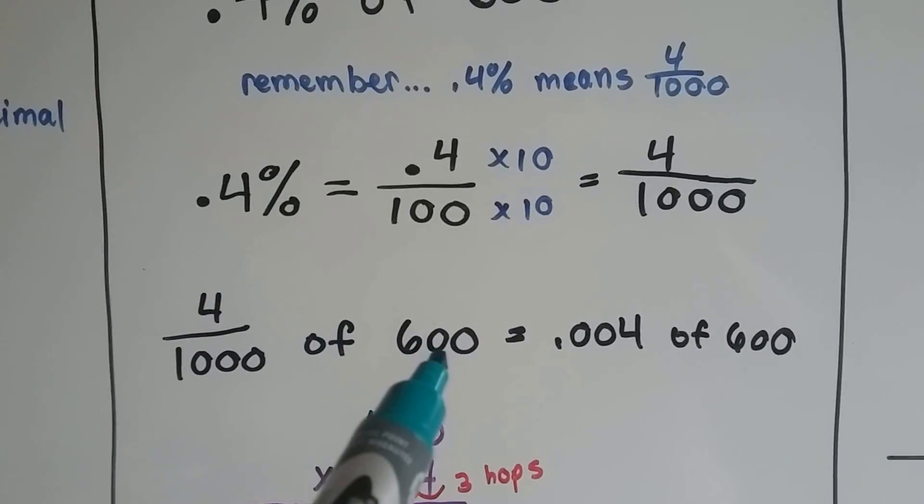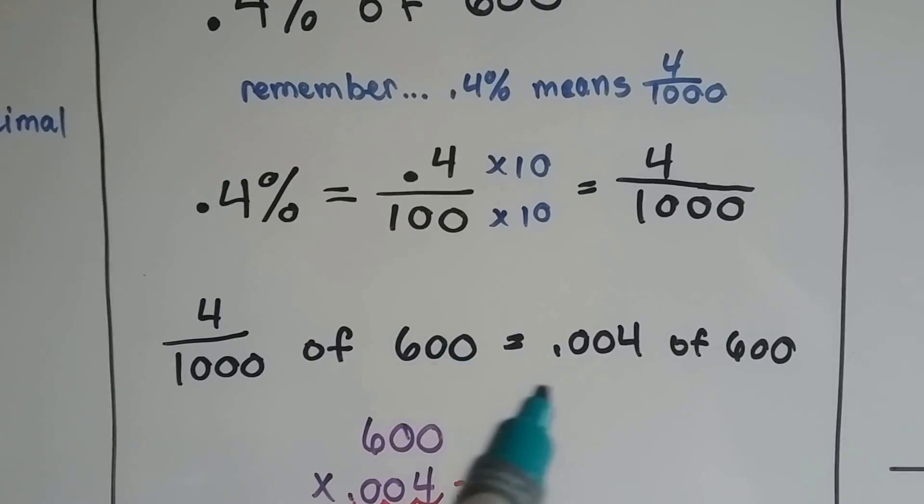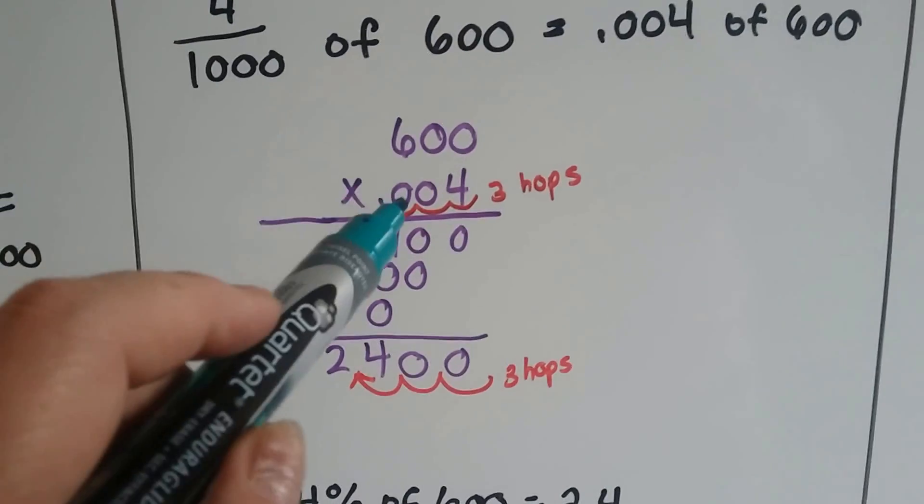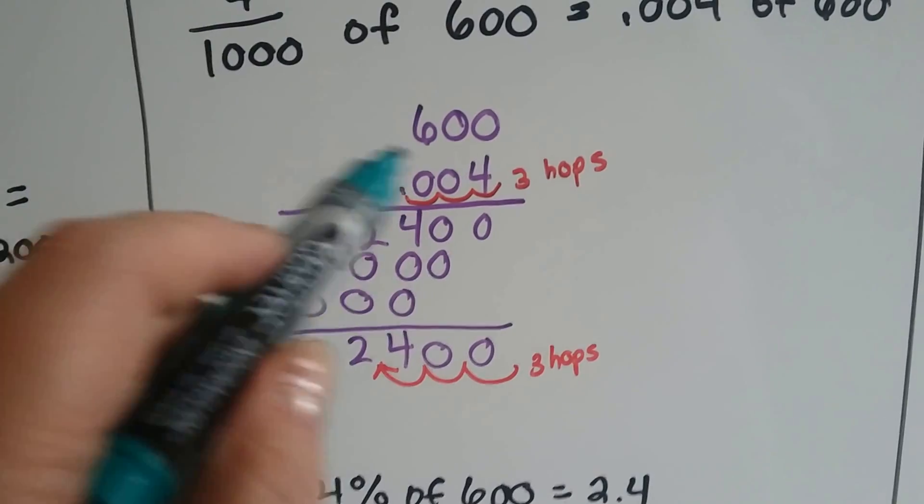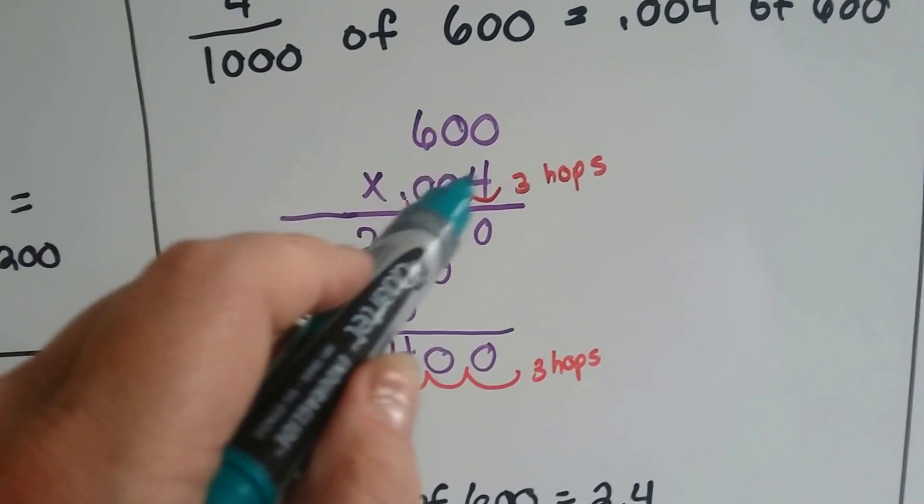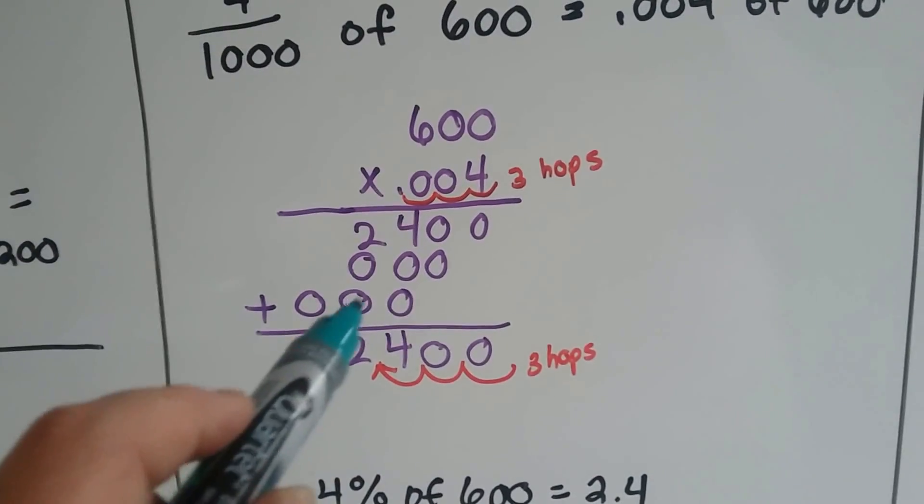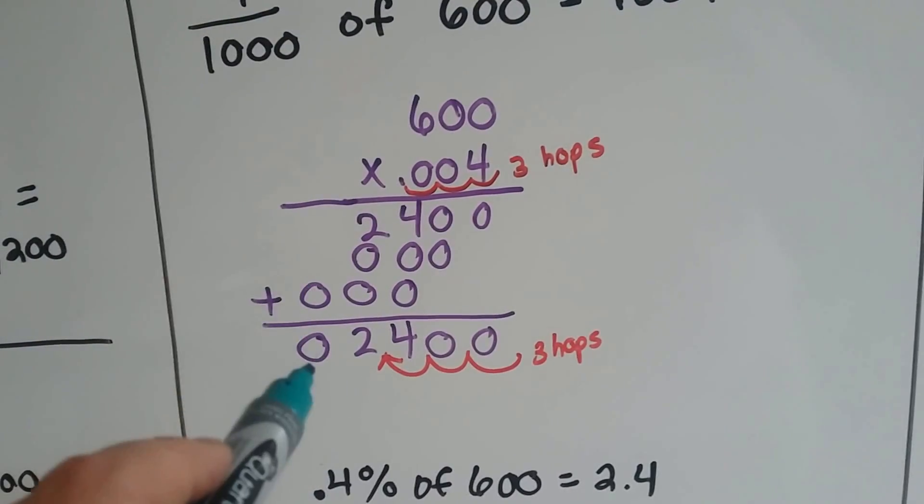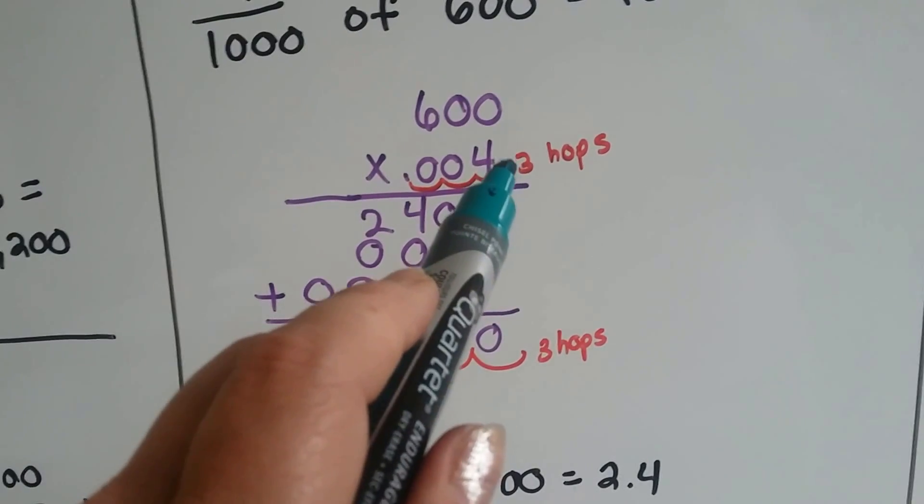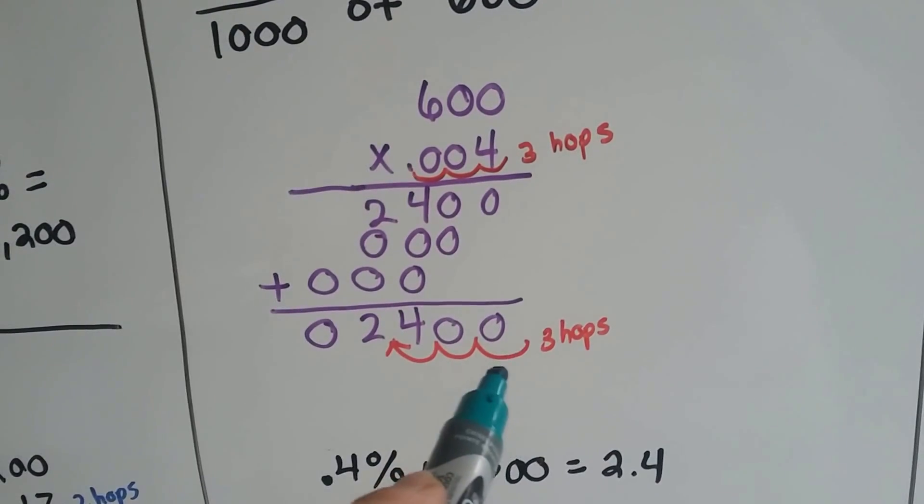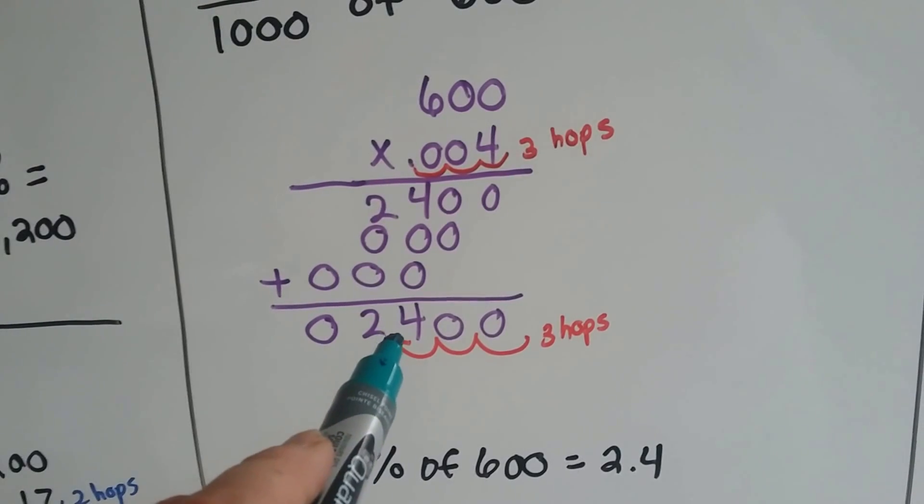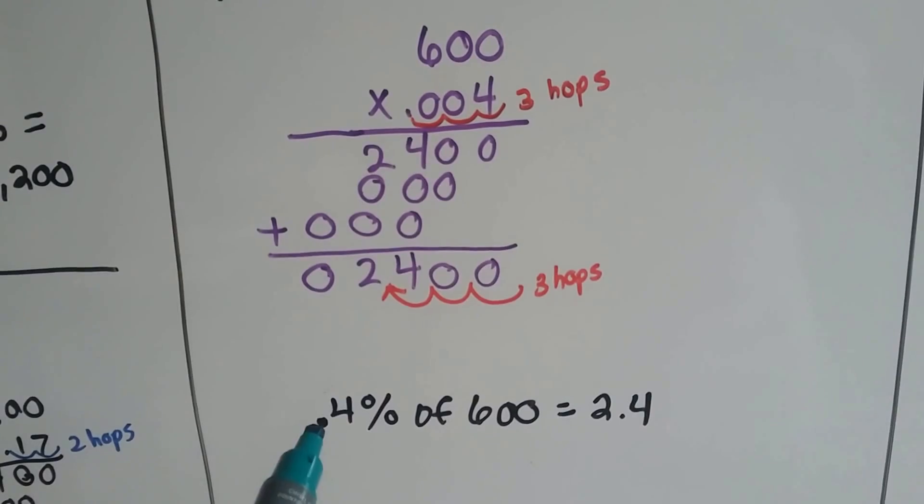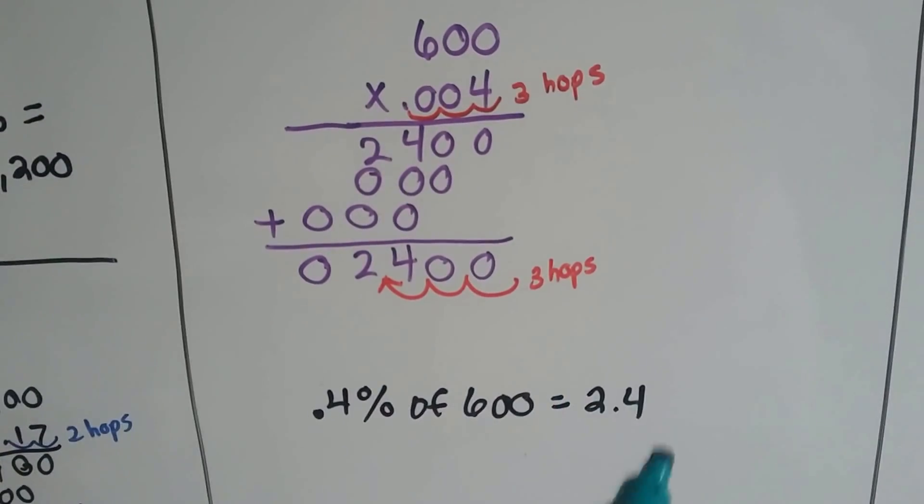Four one thousandths of 600 is now what we're trying to find. Write it as a decimal, .004 of 600. We do our multiplication, and we multiply all the zeros together and the four and the six together. And this is what we come up with, and we drop our zeros, drop our four, drop our two, drop our other zero. We count the hops, one, two, three. Count the hops in the product, one, two, three. And we know the decimal point goes back into the product at 2.4, right there. So .4% of 600 is 2.4.